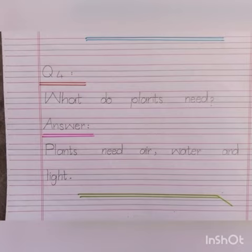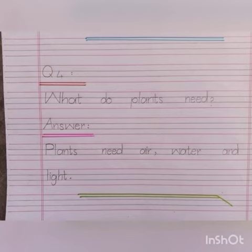Question No. 4. What do plants need? پودوں کو کس چیز کی ضرورت ہوتی ہے؟ Answer is Plants need air, water and light. پودوں کو ہوا کی، پانی کی اور روشنی کی ضرورت ہوتی ہے.